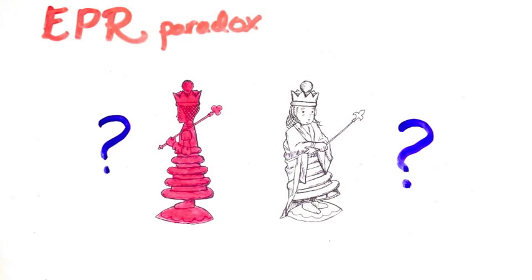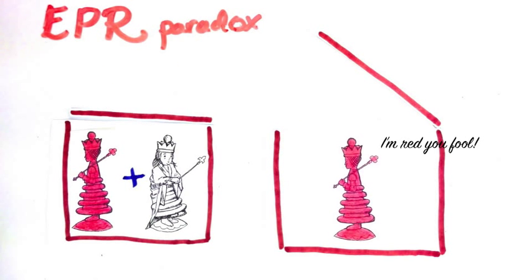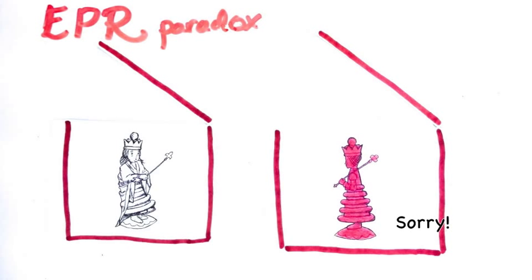Quantum mechanics insists that all possible things happen, so each particle is both red and white. But if we open one box and the object is white, then when we open the other, we must have the red object.